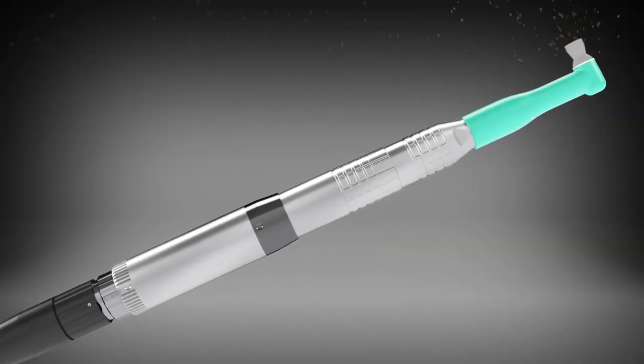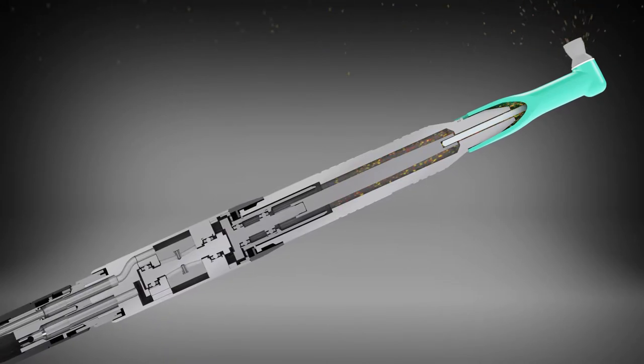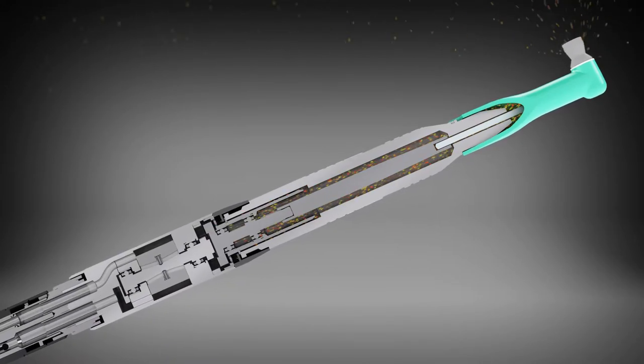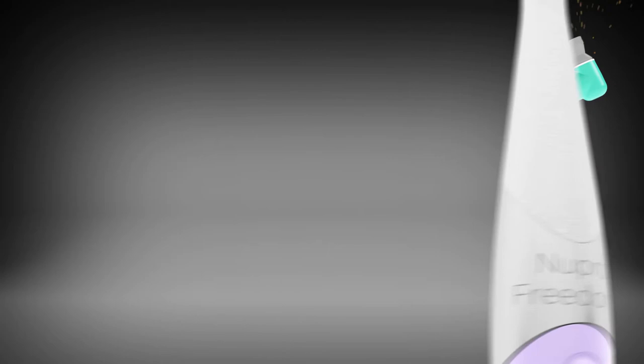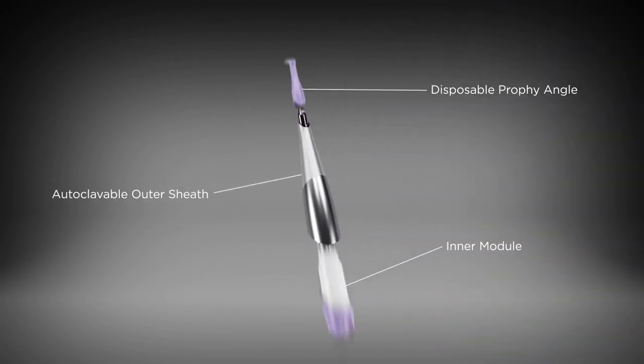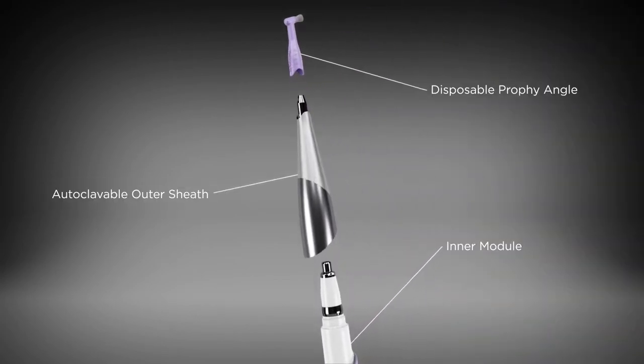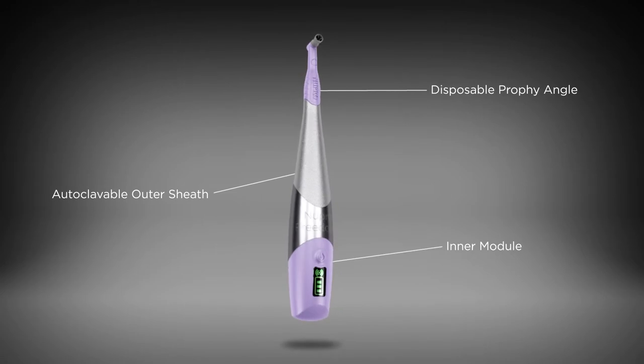Air-driven handpieces require external venting, which provide access for this cross-contamination. Unlike air-driven handpieces, the Nupro Freedom is cordless and not connected to an external energy source, so it does not require external venting.